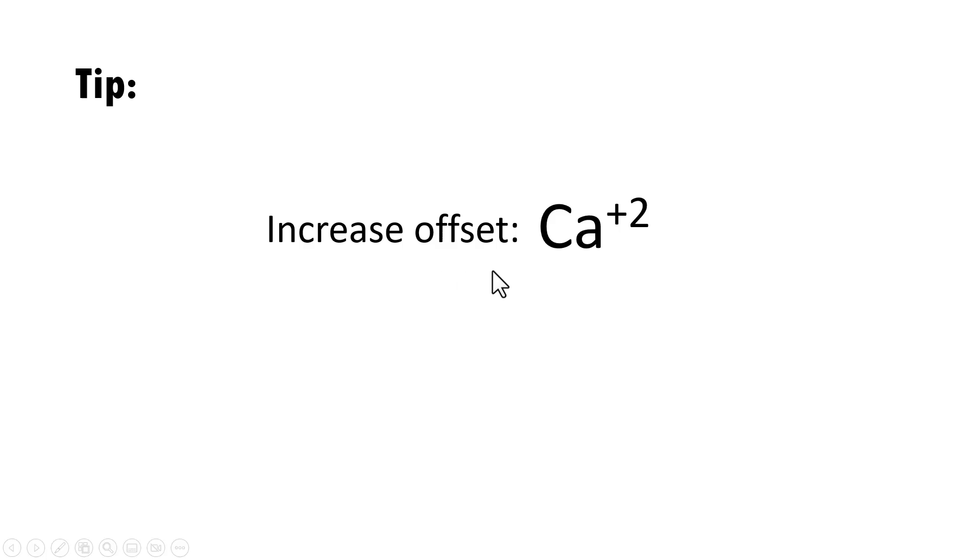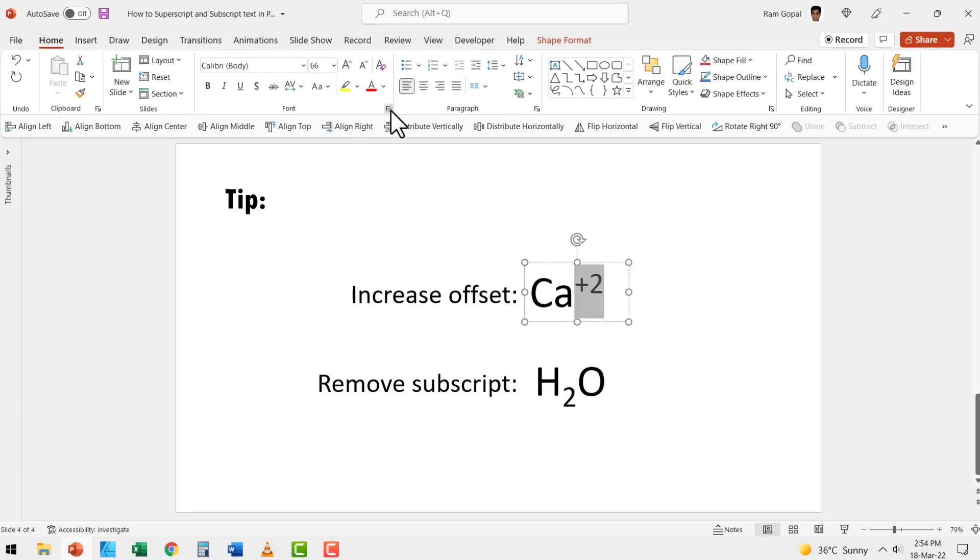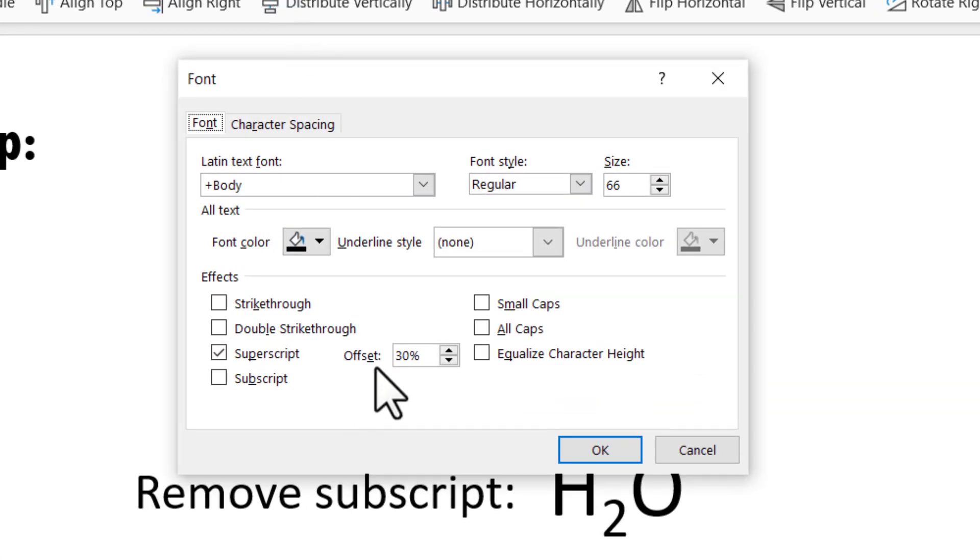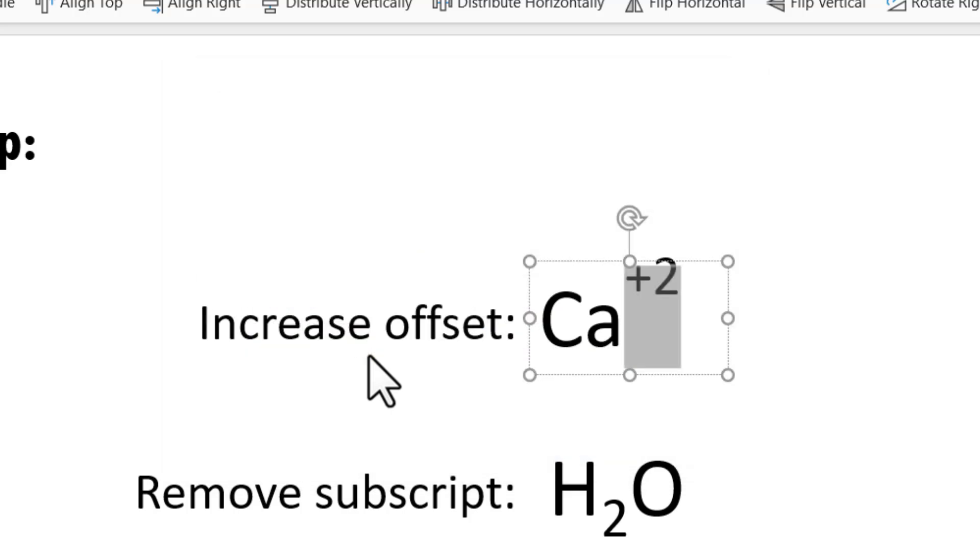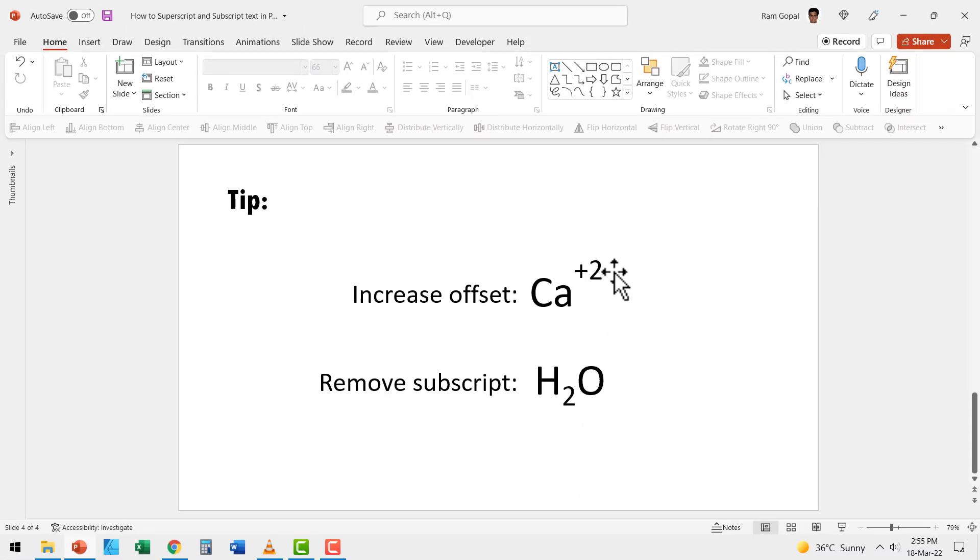Now let me give you two useful tips before we close this video. The first one is how do you increase the offset of a superscript? For example, here I have the superscript, which is two plus. If I want to raise the level a little bit, I can do so by going to the same dialog box that we launched earlier. Here I can change the offset percentage instead of the default 30%. I can make it 60% and you can see that the text is now written much higher than the baseline. The same way you can increase the offset of subscript as well.